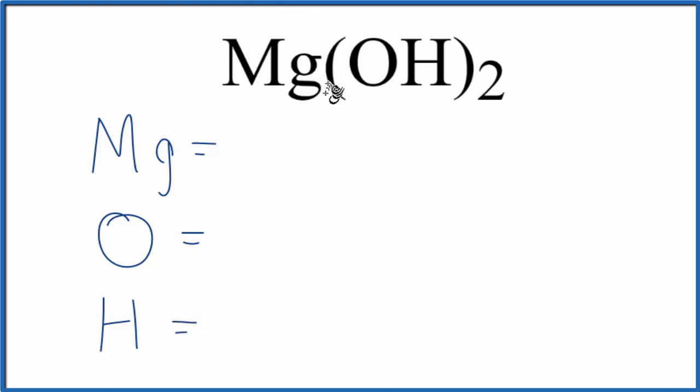So for the magnesium, there's no subscript written, and when that's the case, we just assume that there's a one there. So we have one atom of magnesium. For the oxygen and the hydrogen, the same. There's nothing written right after it, so there'll be one of those.